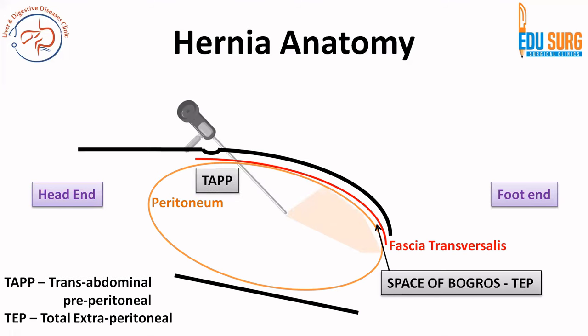When we do trans-abdominal pre-peritoneal repair — named in case you are new to these surgeries — trans-abdominal means that you are entering the peritoneum; your laparoscope is entering the peritoneum, and that is why it is known as trans-abdominal. Then you make a cut on the peritoneum to see the space of Bogros from inside, and that is why it is known as trans-abdominal pre-peritoneal. The other approach is total extra-peritoneal, where you are directly inserting your laparoscope into the space of Bogros.